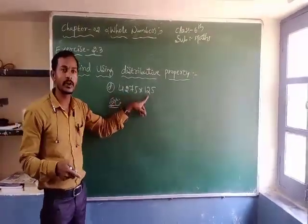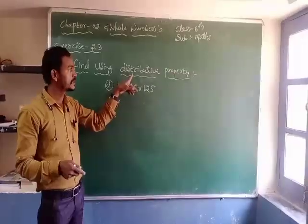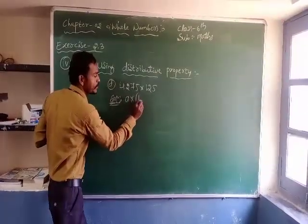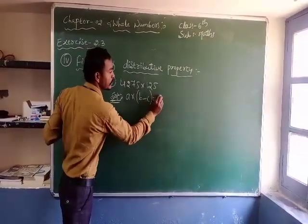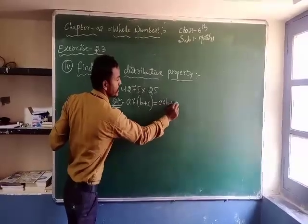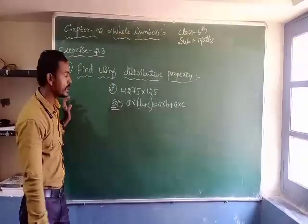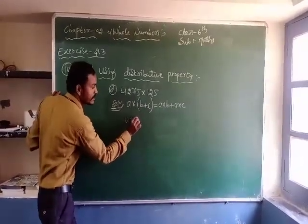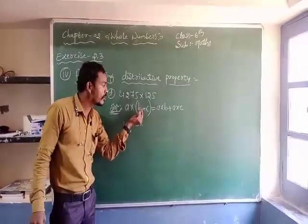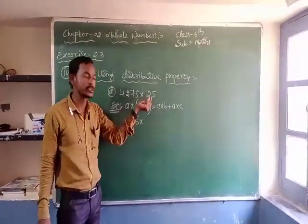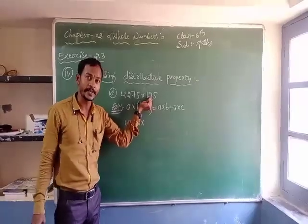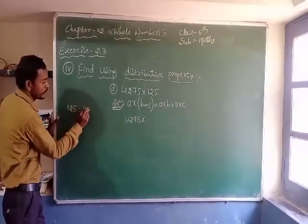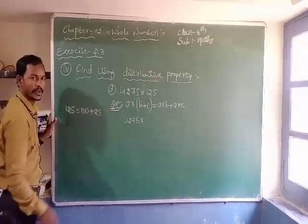I have to find the product of these two numbers by using distributive property. Our distributive property is: A into B plus C is equal to A into B plus A into C. Here, the value of A is 4275, and the value of B plus C is equal to 125. Now I have to split 125 into two numbers — 125 is equal to 100 plus 25.